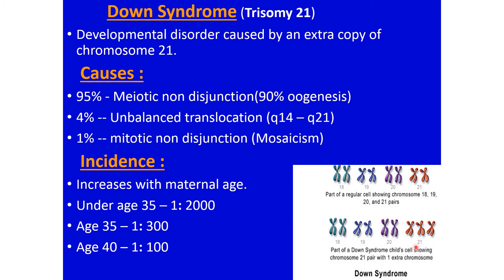The incidence of Down syndrome increases with maternal age. If a female becomes pregnant at less than 35 years, the chance of a Down baby is 1 in 2000. As age approaches 35 or beyond, the incidence increases — at 35, the chance is 1 in 300. After age 40, it is even three times higher than at age 35.